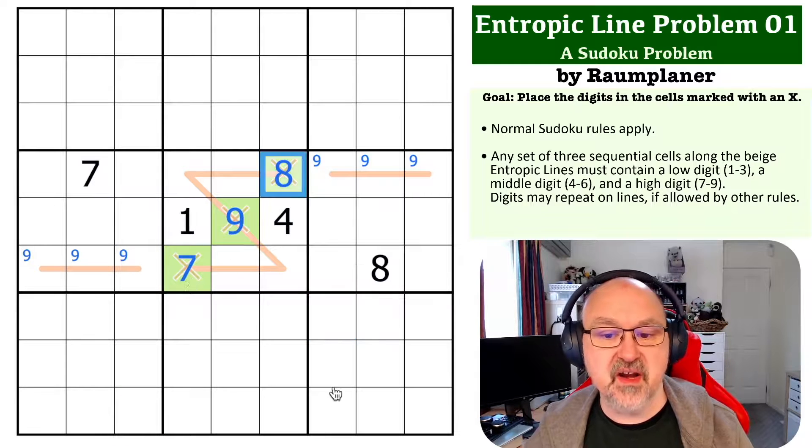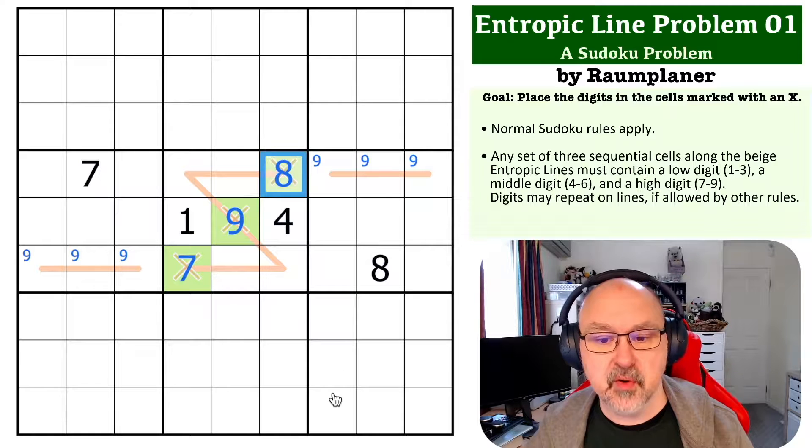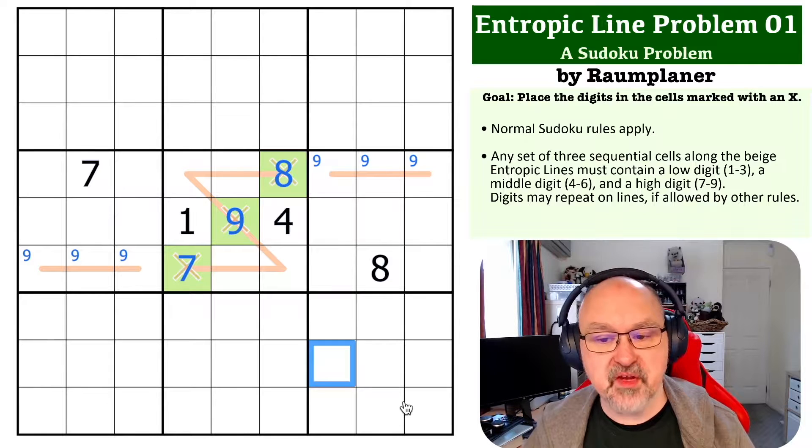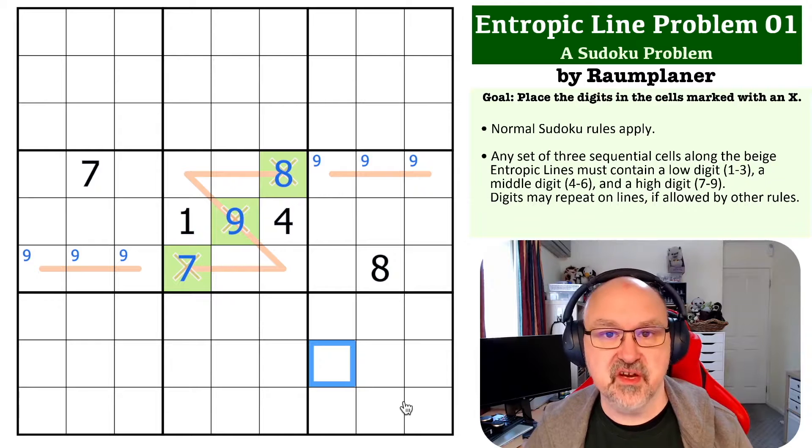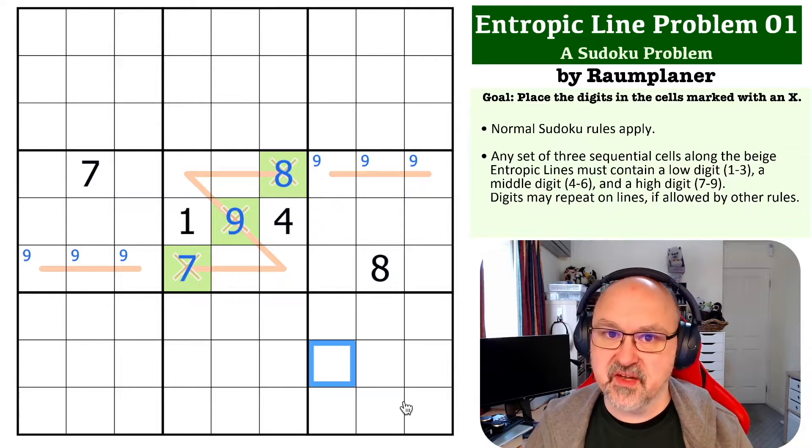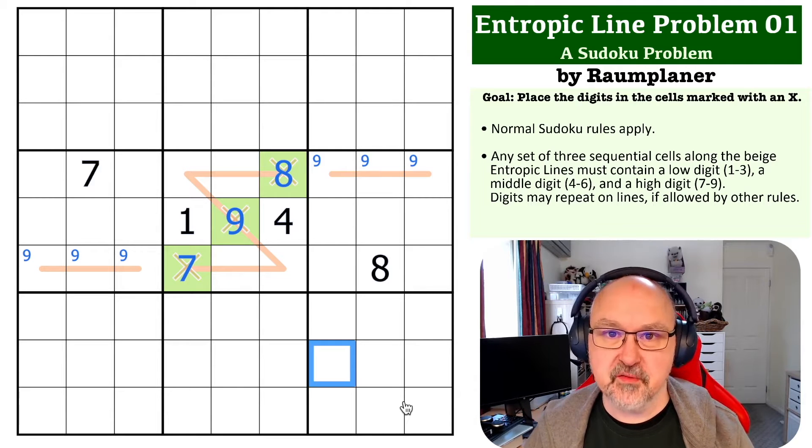So you end up with 7, 9, 8 in the central box. So that's the way this problem works. It's a really nice entropic trick that you will see in some entropic puzzles, and is a very nice introduction to the entropic constraint. Hopefully you were able to figure that one out. Hopefully you're enjoying the series. And as always, good luck with your solving.